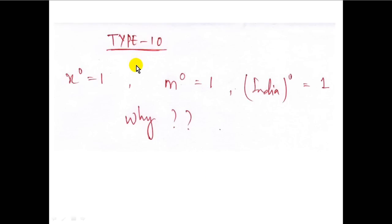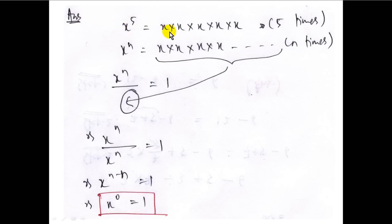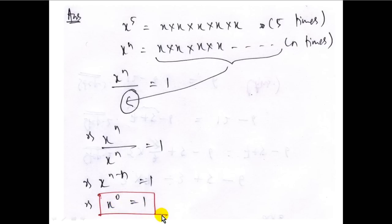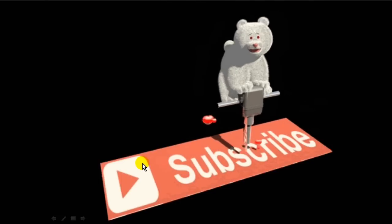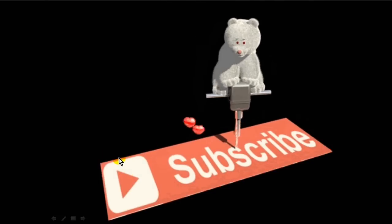Type 10: why does anything to the power 0 equal 1? Suppose x to the power n equals x multiplied n times. If we divide x to the power n by itself, we get x to the power n upon x to the power n, which equals 1. This also equals x to the power (n minus n), which is x to the power 0. Therefore x to the power 0 equals 1. Please like this video, subscribe to the channel, and share with friends. Thank you.